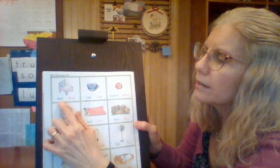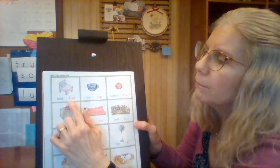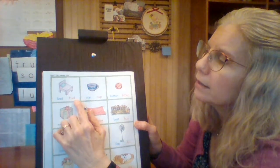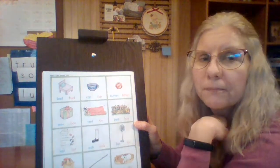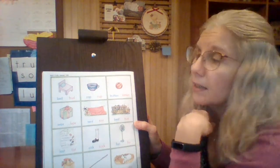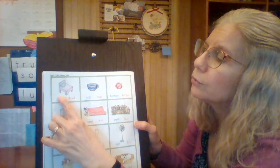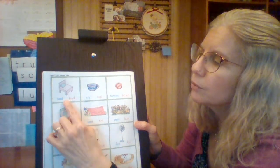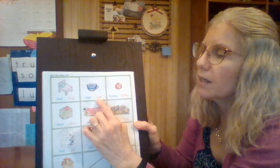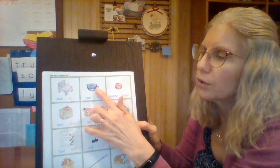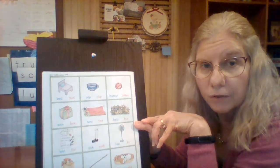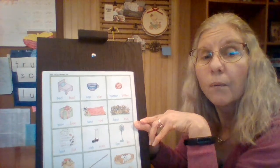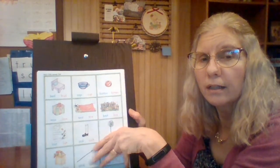B-A-D. Bed. B-U-D. Bud. So what is that a picture of? Bed. And bed is spelled with an E, so you would circle the blue word. You are going to do the same thing — sound out both words and circle the word that goes with the picture. When you're done, unpause the video and start again with the next part.